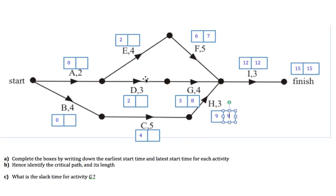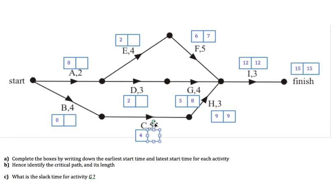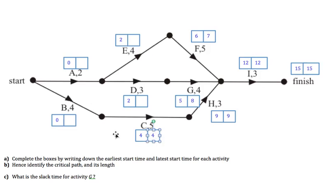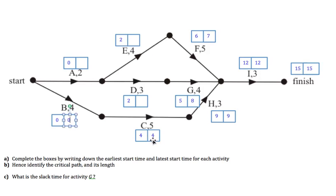Working back along these paths: Activity C must finish in time for H to start at 9. So 9 take away 5 (how long C takes) gives us a latest start time of 4 for Activity C. Going back to B: B needs to finish so that C can start at 4. Therefore, the latest start time for B is 0, because B takes 4 units of time and must start at 0 in order for C to start at 4.